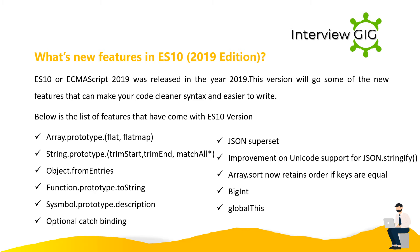What are the new features in ES10 (ECMAScript 2019)? ES10 was released in 2019, introducing features to make code cleaner and easier to write. These include: Array.prototype.flat and flatMap, String.prototype.trimStart, trimEnd, and matchAll, Object.fromEntries, Function.prototype.toString, Symbol.prototype.description, optional catch binding, JSON superset, improved Unicode support for JSON.stringify, stable Array.sort, BigInt, and globalThis.